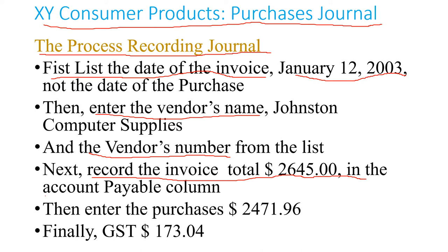You record the invoice total, which is $2,645, in your accounts payable — this is the liability account that your company is going to pay after 30 days. Then you enter the purchases amount in the purchases column, and finally you put the GST of $173. In this case we don't have any PST because this item is for resale, so you will charge that PST on the sale later.